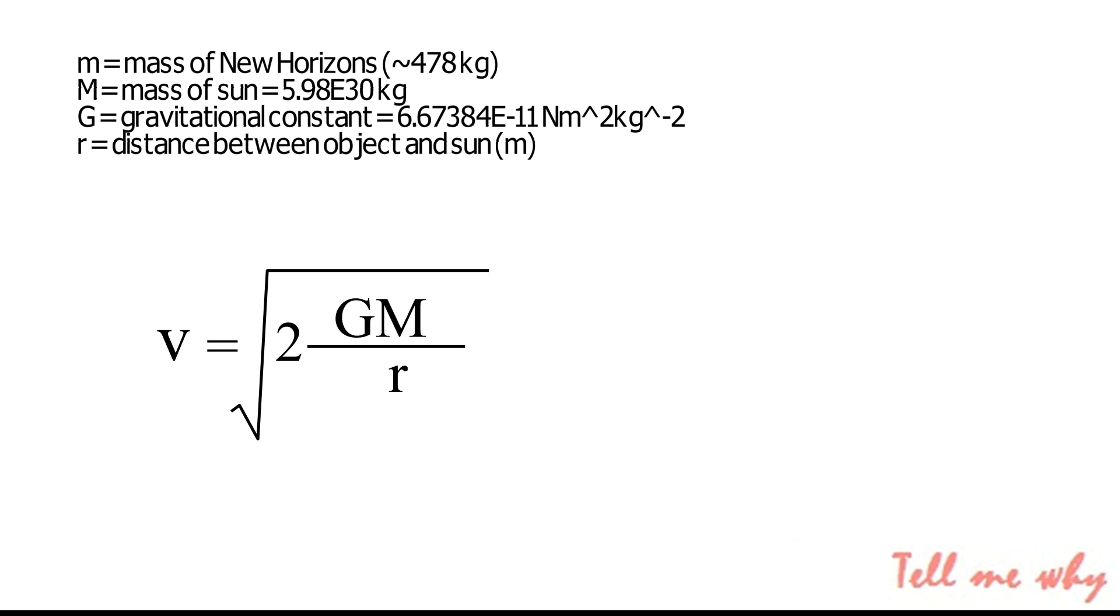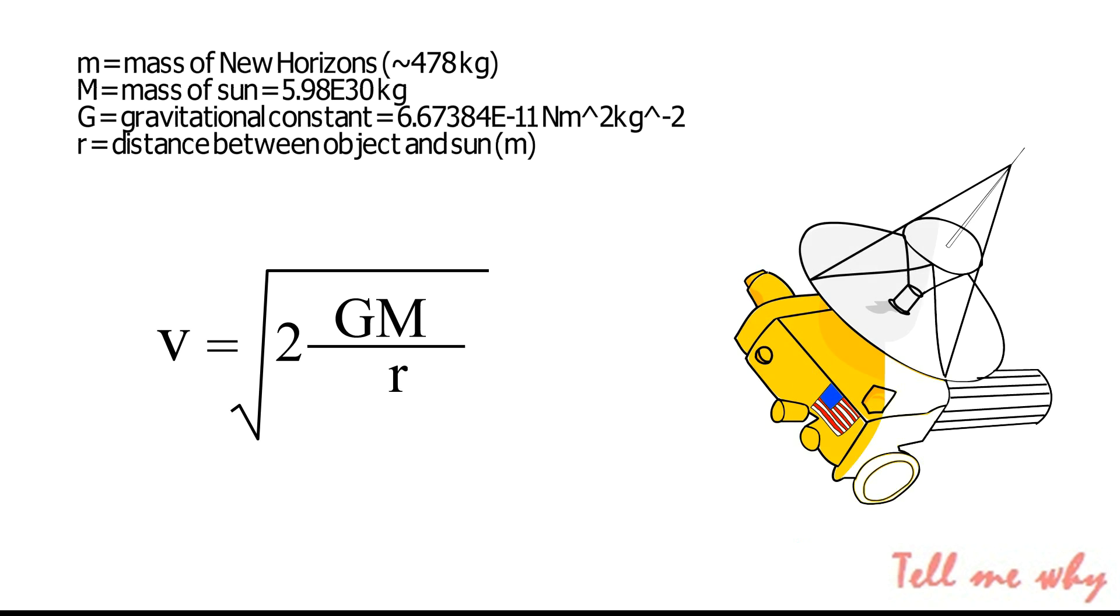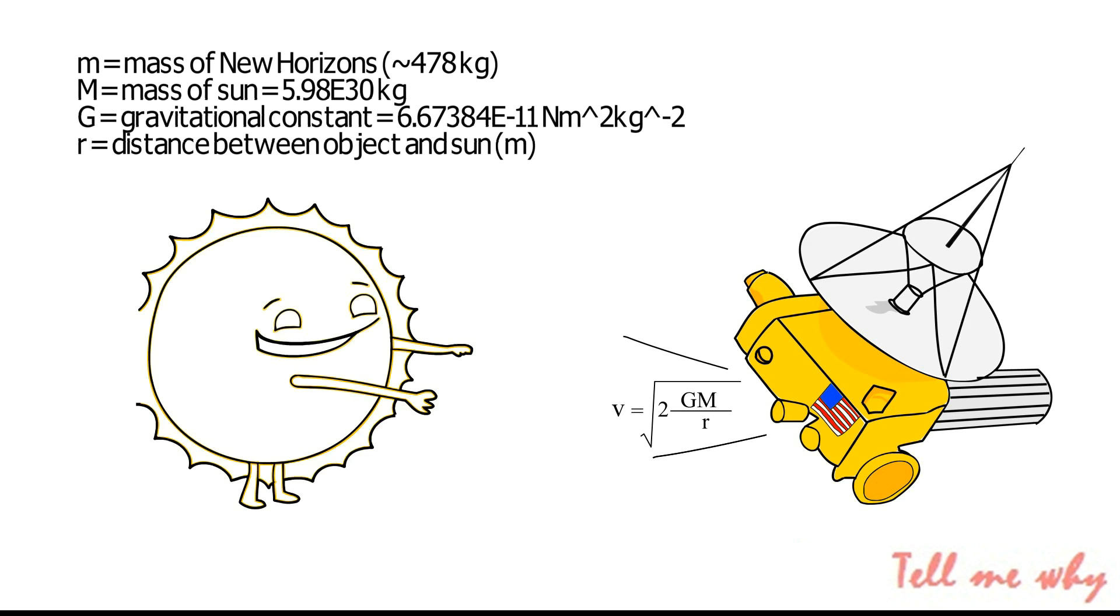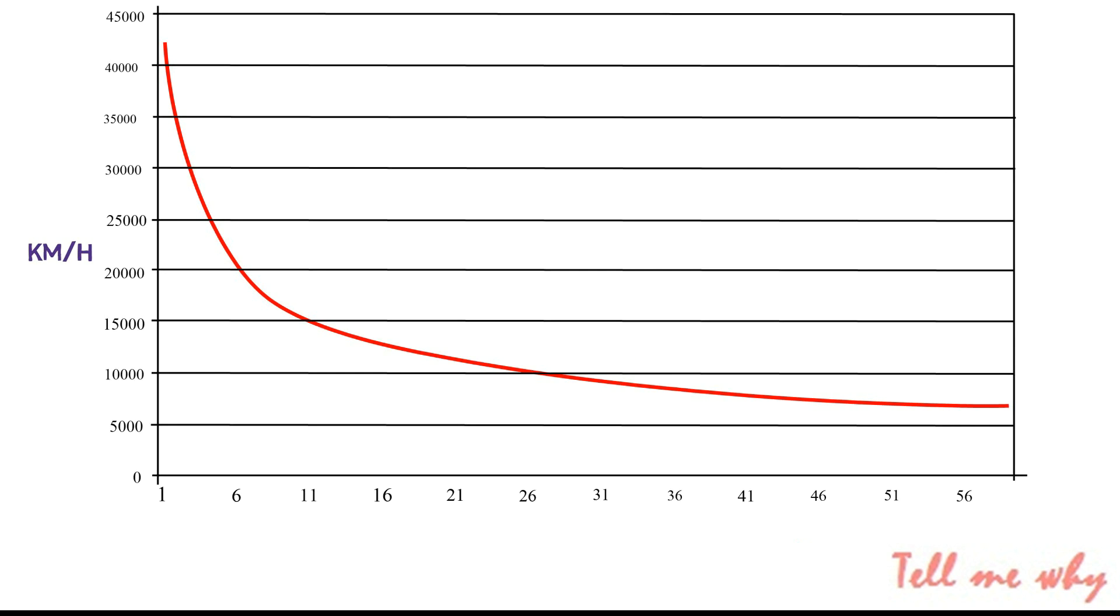And solving for V, we get this. Any spacecraft moving in excess of that velocity will be able to escape the solar system without firing additional thruster burns. The spacecraft is slowly decelerating because of the pull from the sun, but it started at a great enough speed that it is projected to reach zero speed at infinity. Here is a graph illustrating that deceleration.